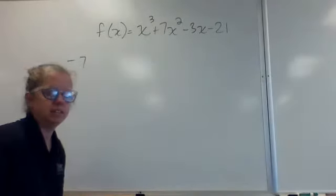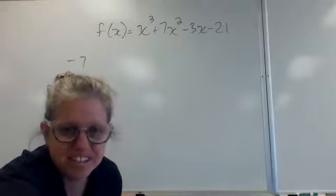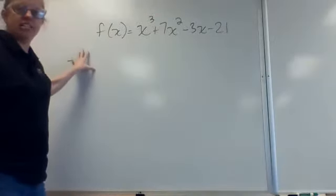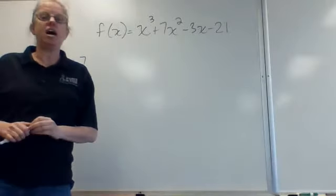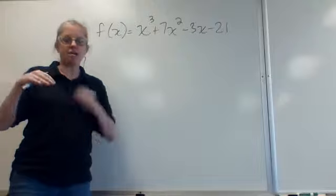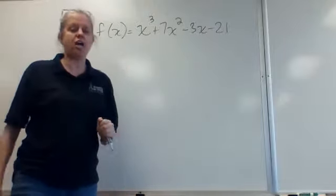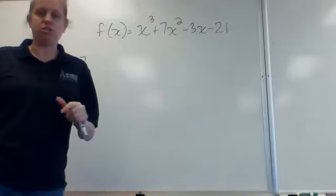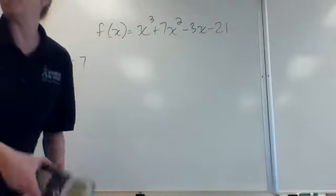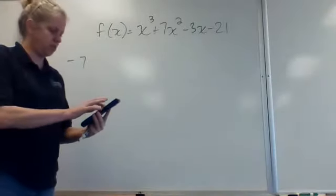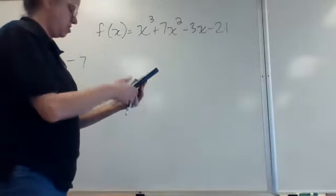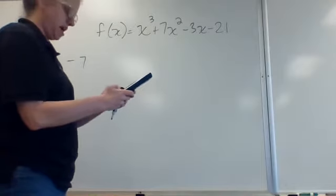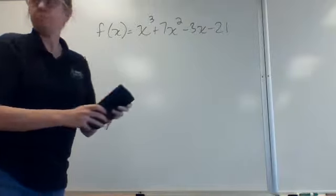On number 12, the problem gives us a function and also a zero of the function, then asks us to find any other zeros. My first go-to is to put it in Y equals and see if I can visually see where it crosses the x-axis, because those are the zeros or x-intercepts. That's easiest. So let's put this one in Y equals: x to the third plus 7x squared minus 3x minus 21 and graph it.